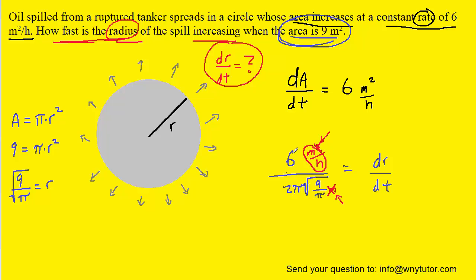Then we can pick up our calculators and figure out what this quantity actually is. And when we do so, we can see that dr/dt is approximately 0.564, and again, the unit that remains is meters per hour. So this would be the correct answer to the question.